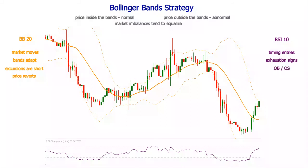Another way of highlighting the momentum decrease is finding the divergences. When the price makes lower lows and the oscillator is not, or when the price makes higher highs and the oscillator is not, the trend is showing weakness and the chances of a reversal are increasing.